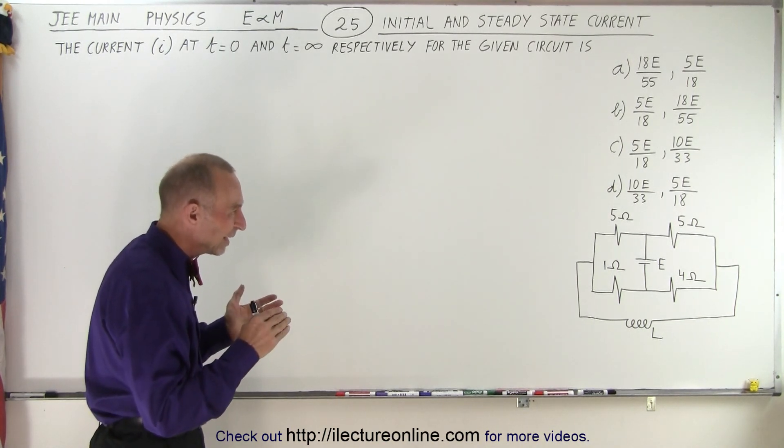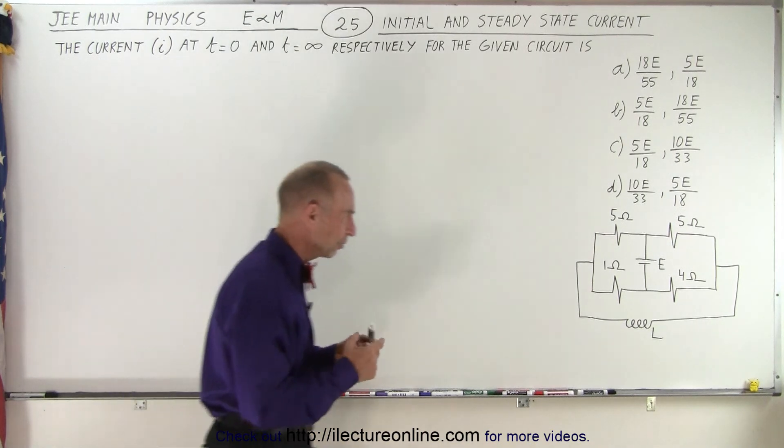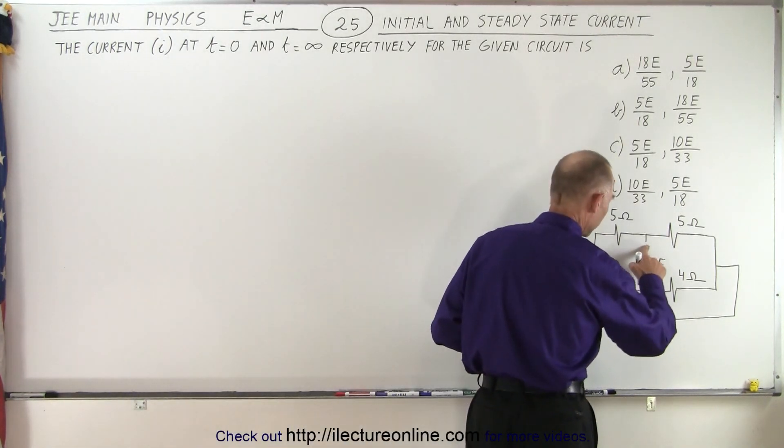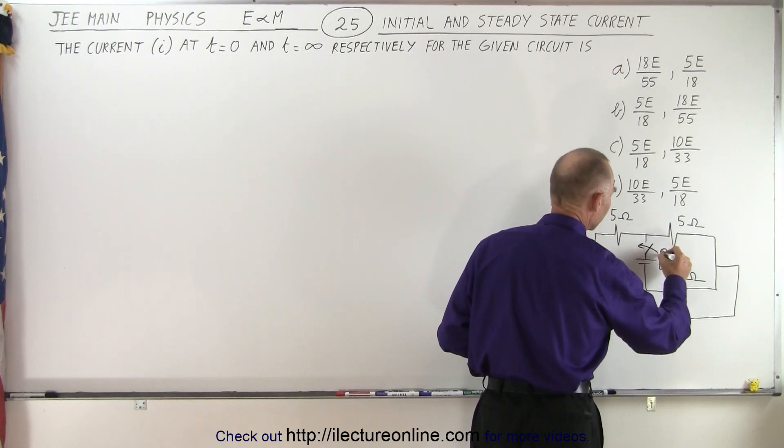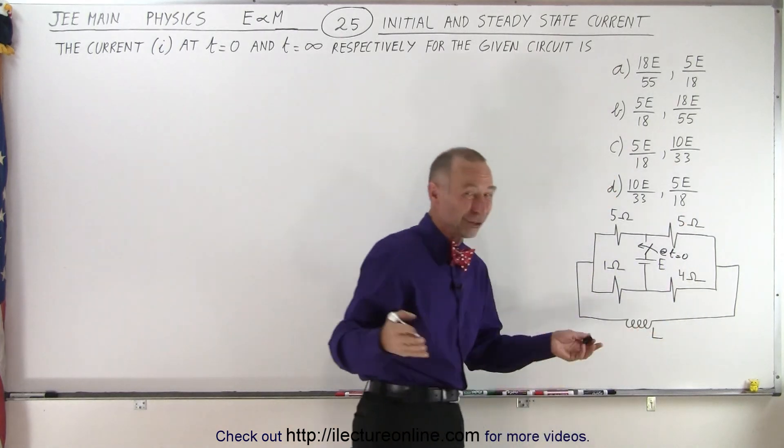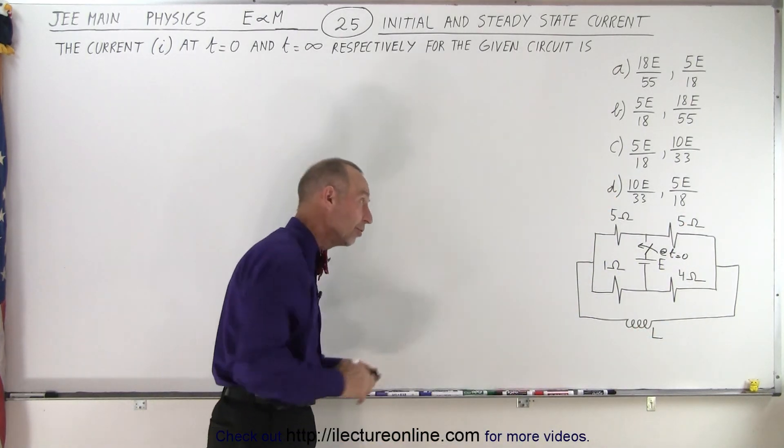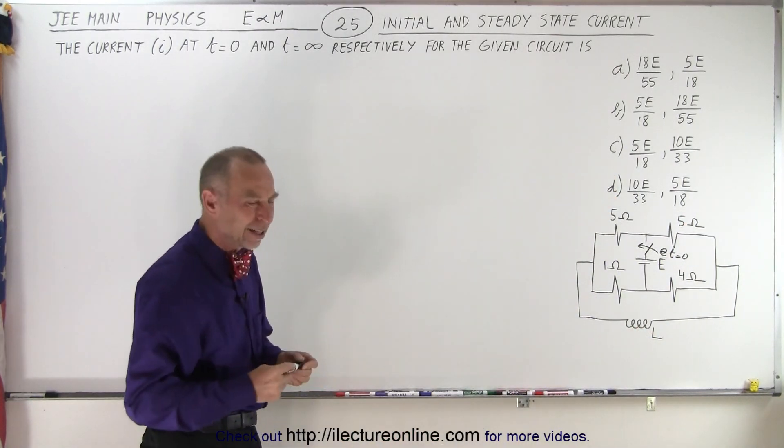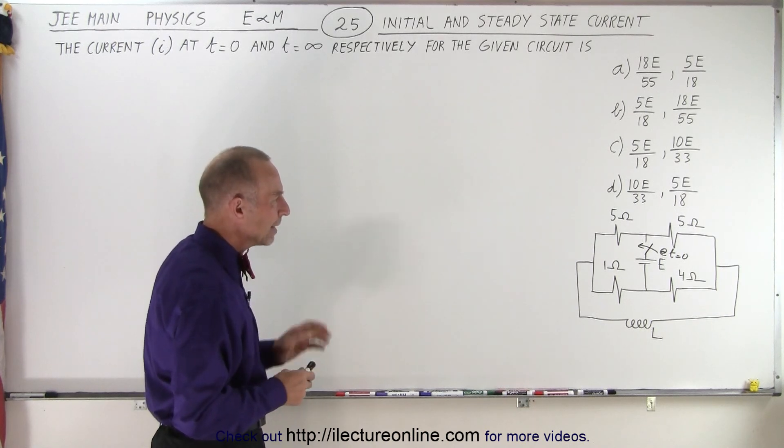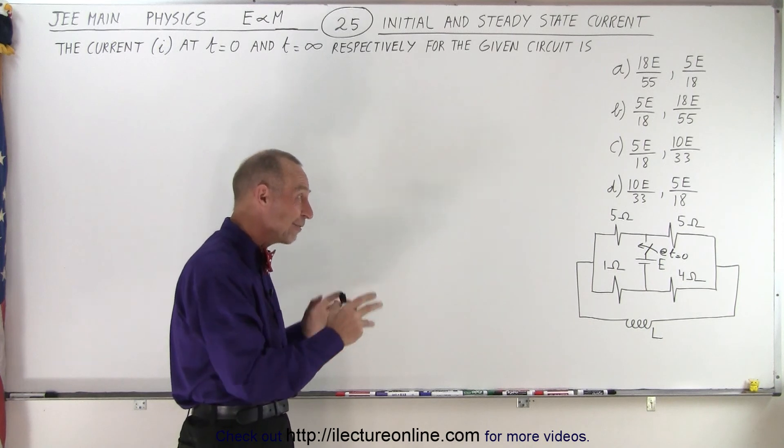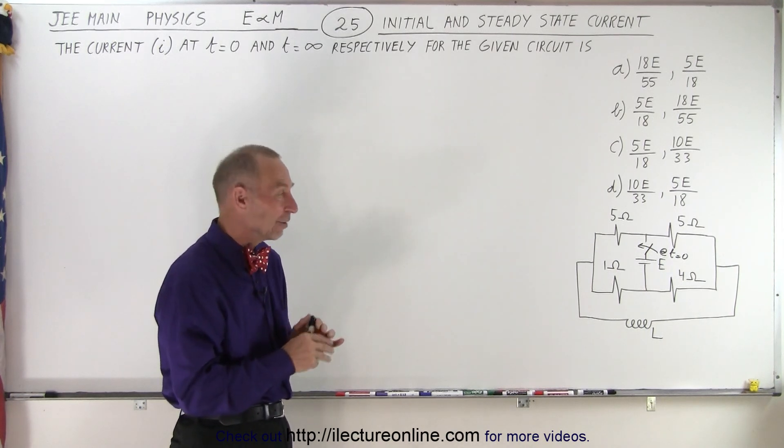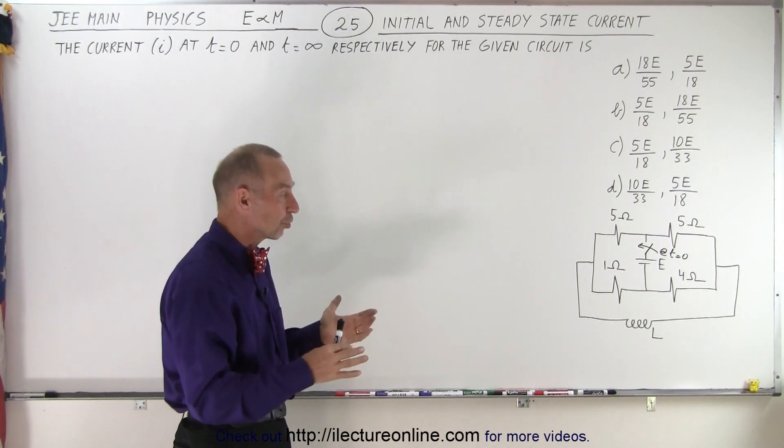Now what isn't very good here is they didn't put in a switch. If I was going to set this problem up, I'd probably put in a switch here like this, where at t equals zero, the switch would close and current will begin to flow to the circuit. I think that's what they meant. They should have put in a switch, they didn't, cause a little bit of confusion. Now what I like about the circuit is the way it's drawn, it makes it kind of difficult to figure out what's going on. And sometimes it helps to redraw the circuit.